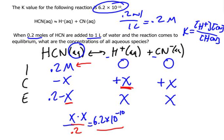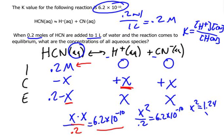So I get X squared over 0.2 equals 6.2 times 10 to the negative 10. Then X squared equals 6.2 times 0.2, which is 1.24 times 10 to the negative 10. Taking the square root of both sides, X equals 1.11 times 10 to the negative 5.